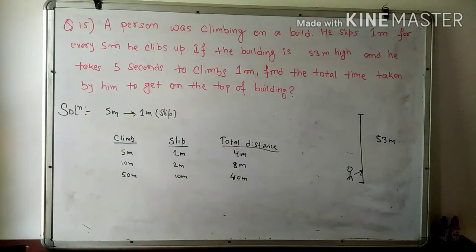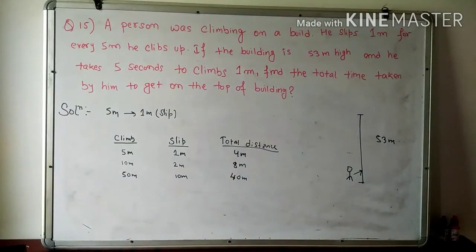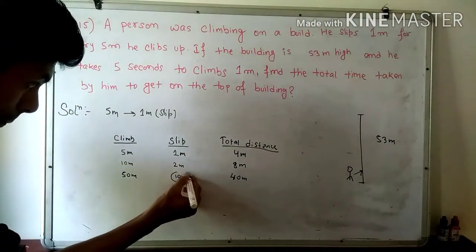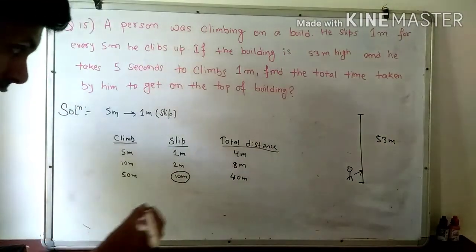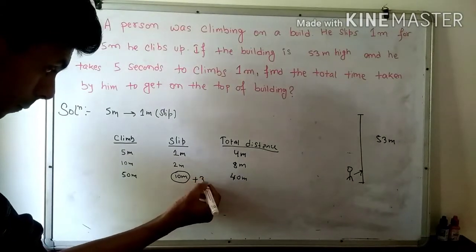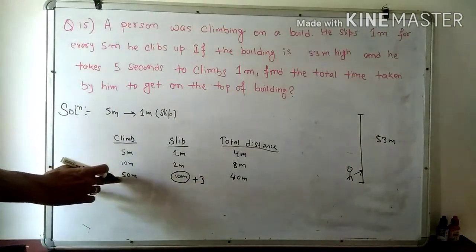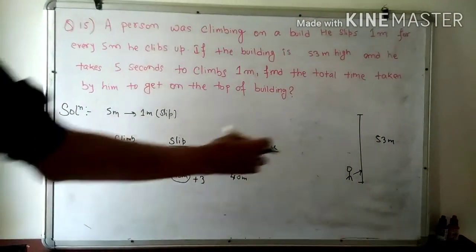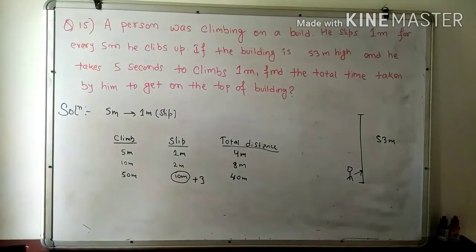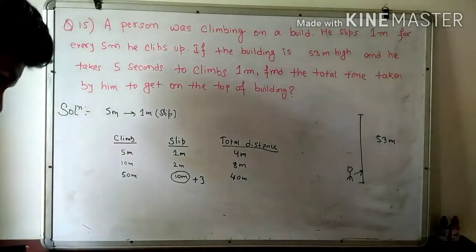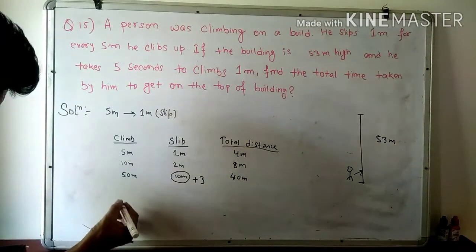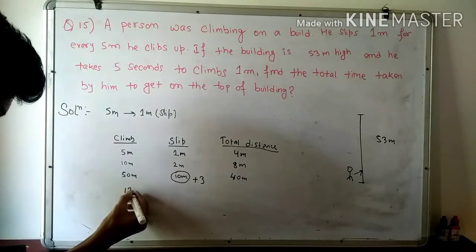The remaining distance after 40 meters is covered: 50 meters is covered, so 10 meters is the remaining distance, plus 3 meters more equals 13 meters remaining. Because the total distance is 53 meters. So the remaining distance is 13 meters — here it is 14 meters. Plus 30 meters. This means you will climb 13 meters.